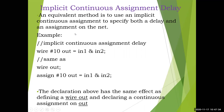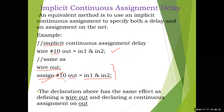Next is implicit continuous assignment delay. An equivalent method is to use an implicit continuous assignment to specify both a delay and an assignment on the net. Previously we declared: wire out; and then assign #10 out = in1 & in2. This can be written in a single line: wire #10 out = in1 & in2. Here the assign keyword is not used — it is implicitly called. This is the implicit continuous assignment delay.